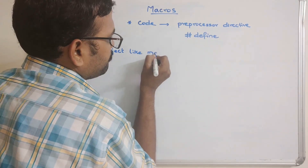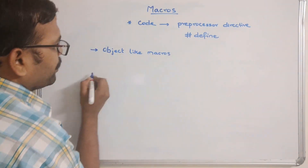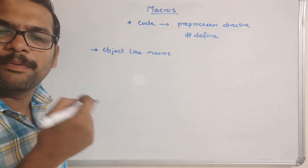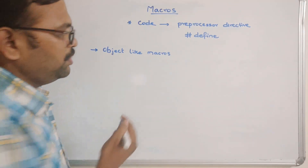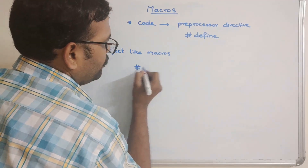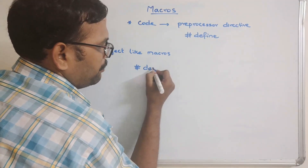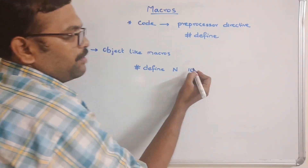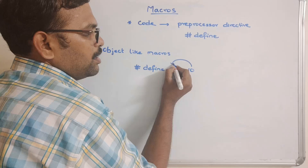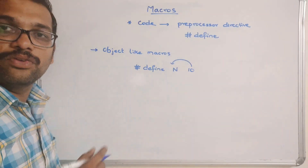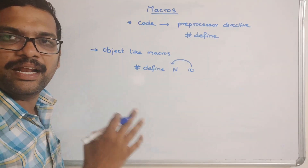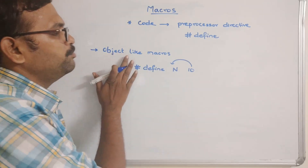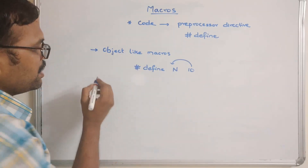Object-like macros are a simple implementation like a constant definition. For example, #define N 10 — the value 10 will be substituted for N in the expression itself. This is called object-like macros.